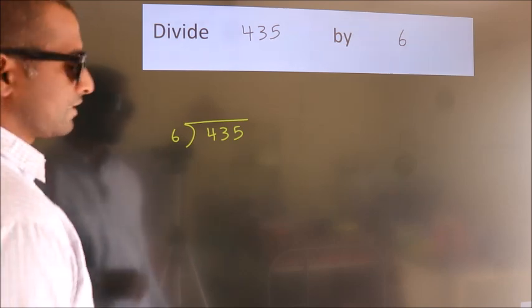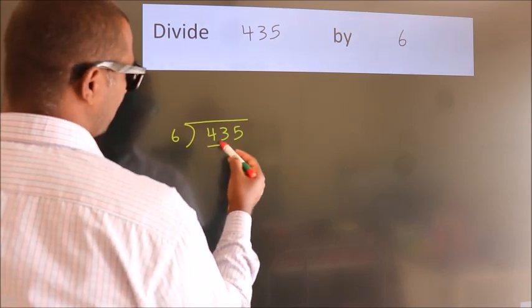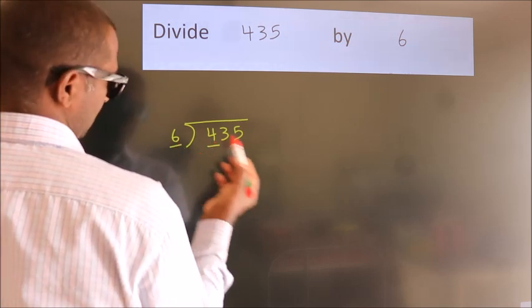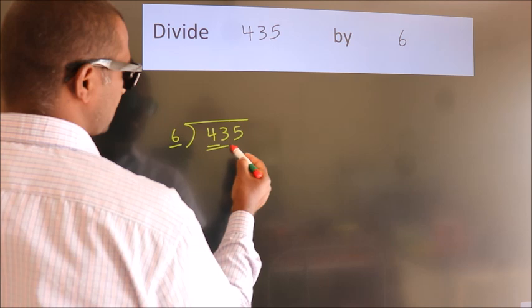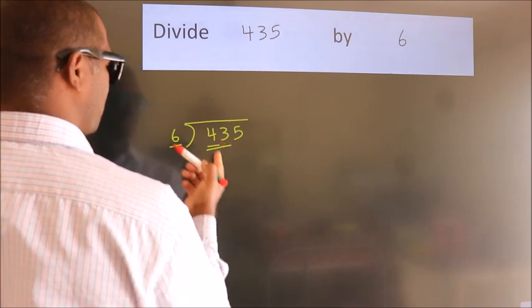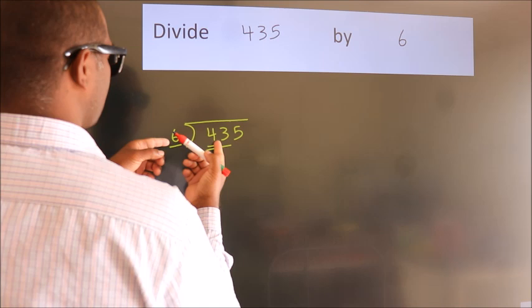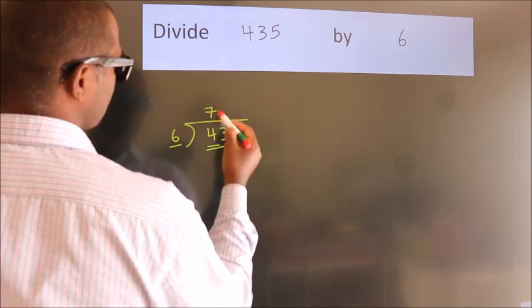Next, here we have 4. Here 6. 4 is smaller than 6, so we should take two numbers: 43. A number close to 43 in the 6 table is 6 times 7 equals 42.